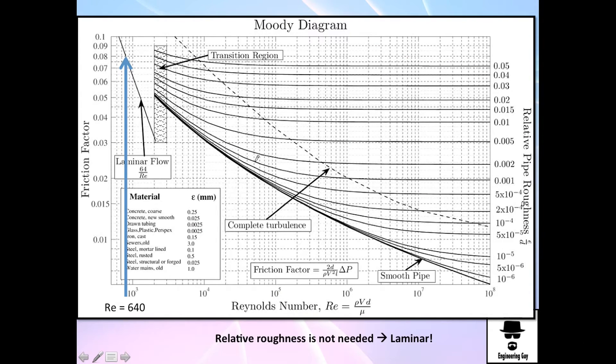So first things first, Reynolds at 640 will be something around here. Go here, it's something about 0.08. Note that if we use the formula, which I would highly recommend, will be 64 divided by 640. And you get 0.10 instead of 0.08. So it's something around here.